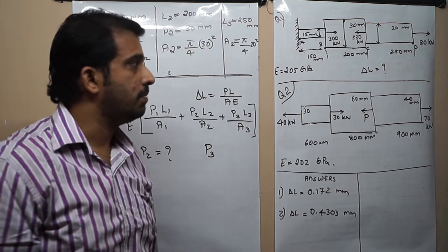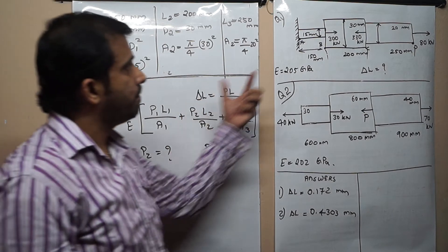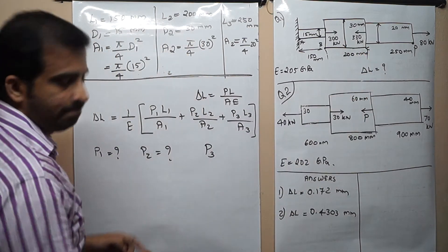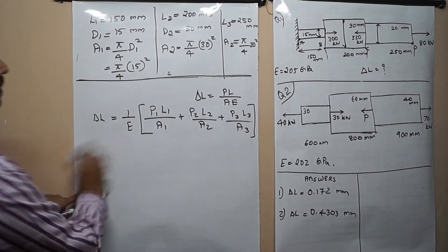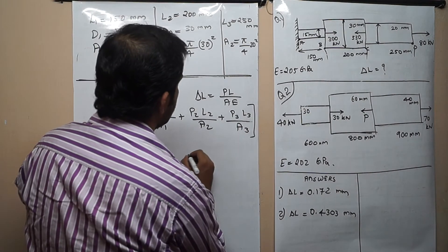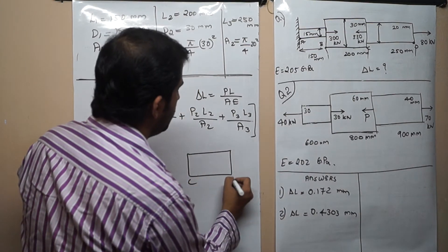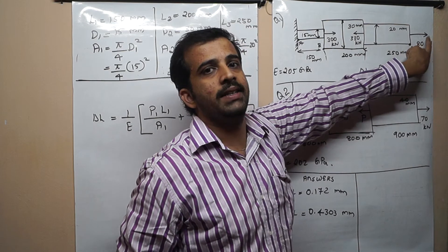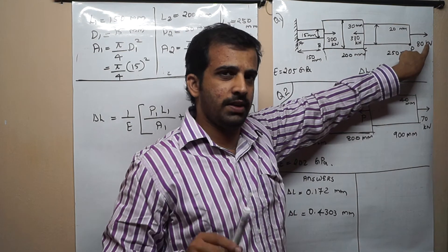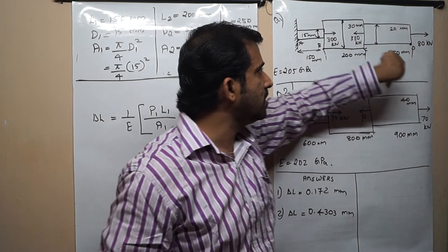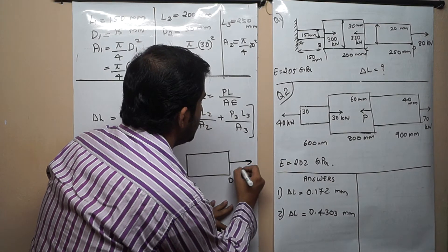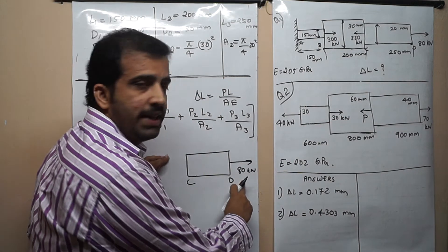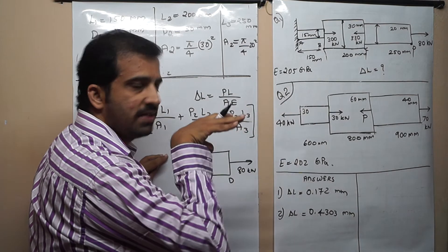From the superposition principle, we draw free body diagrams for this stepped bar to get each segment separately. For section CD, it is said that 80 kN load is acting outwards and it is tensile in nature. 80 kN is the resultant force acting on section CD. Always start from the free end, so we leave this 80 kN as it is.